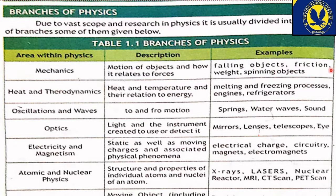Gravitation کا گرتے ہوئے objects پر کیا اثر ہے، friction یعنی رگڑ سے دو چیزوں میں کیا ہوتا ہے، weight کا کیا اثر ہے، اور spinning objects کیا ہوتے ہیں — سادہ لفظوں میں، mechanics کے اندر simple machines بنانا اور simple machines کے ذریعے آہستہ آہستہ complex machines بنانا یہ سب mechanics میں آتا ہے۔